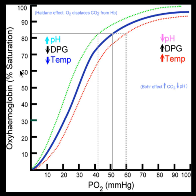On the y-axis, you have oxyhemoglobin percent saturation. In this case it is a percent, and 100 represents 100% saturation of the hemoglobin — meaning the hemoglobin is holding as many oxygens as it possibly can. Down at the bottom, it holds as few as it can.